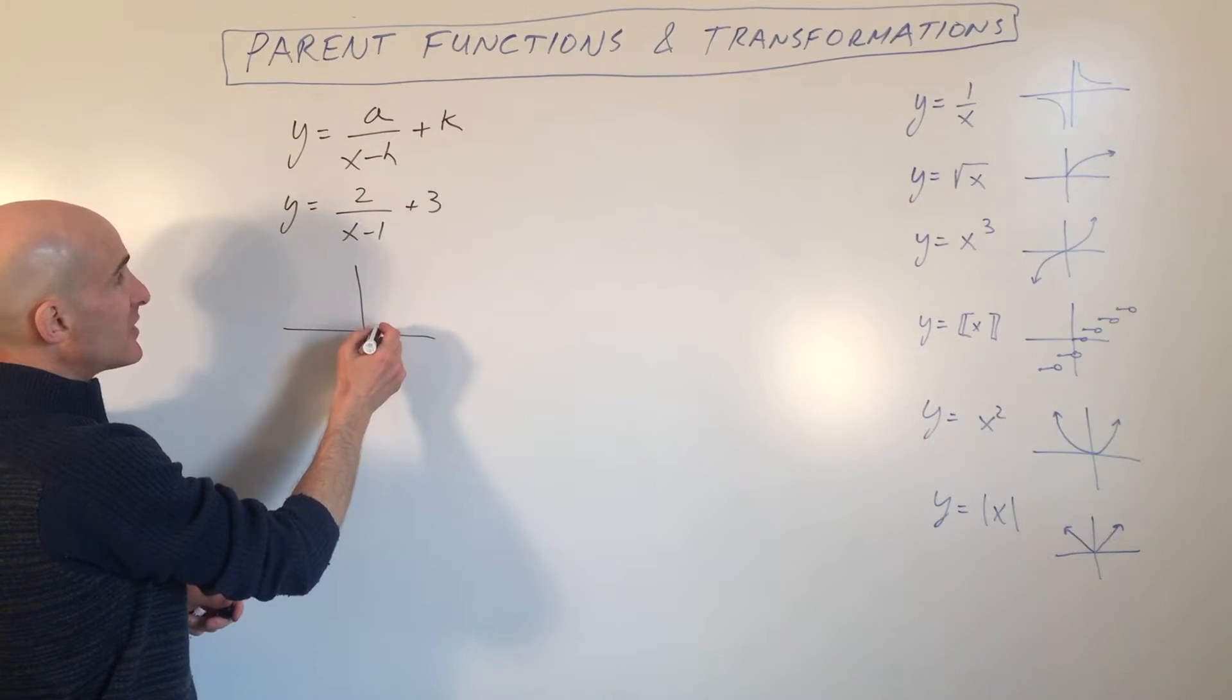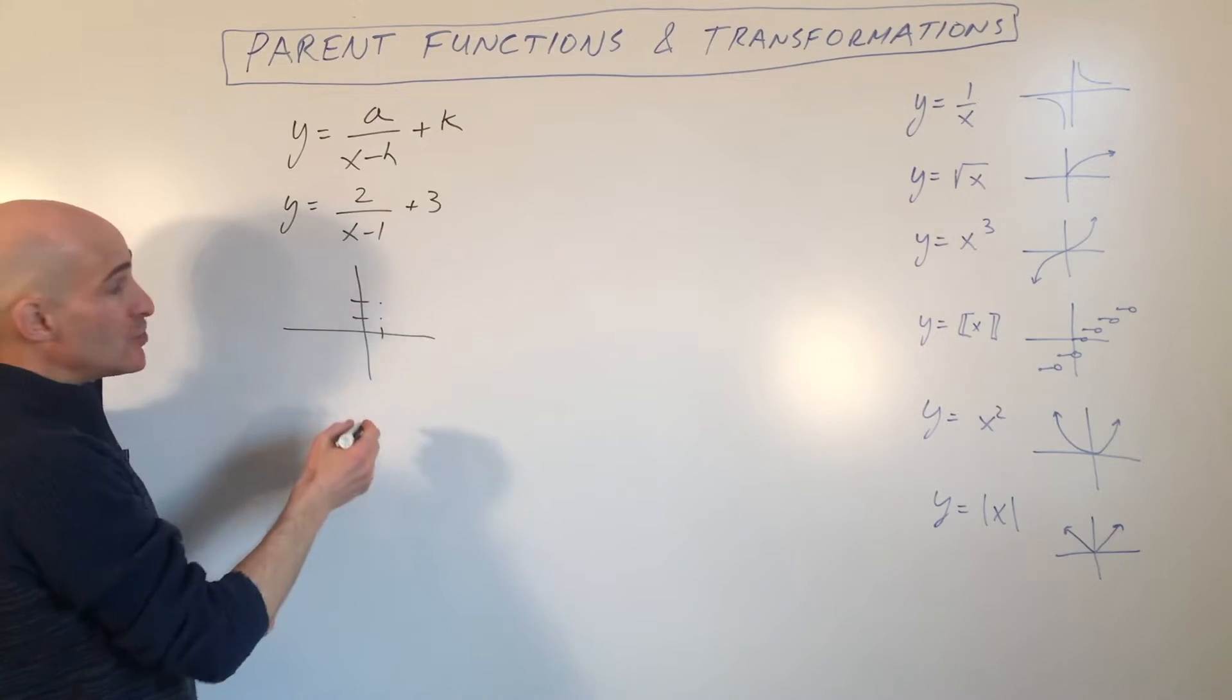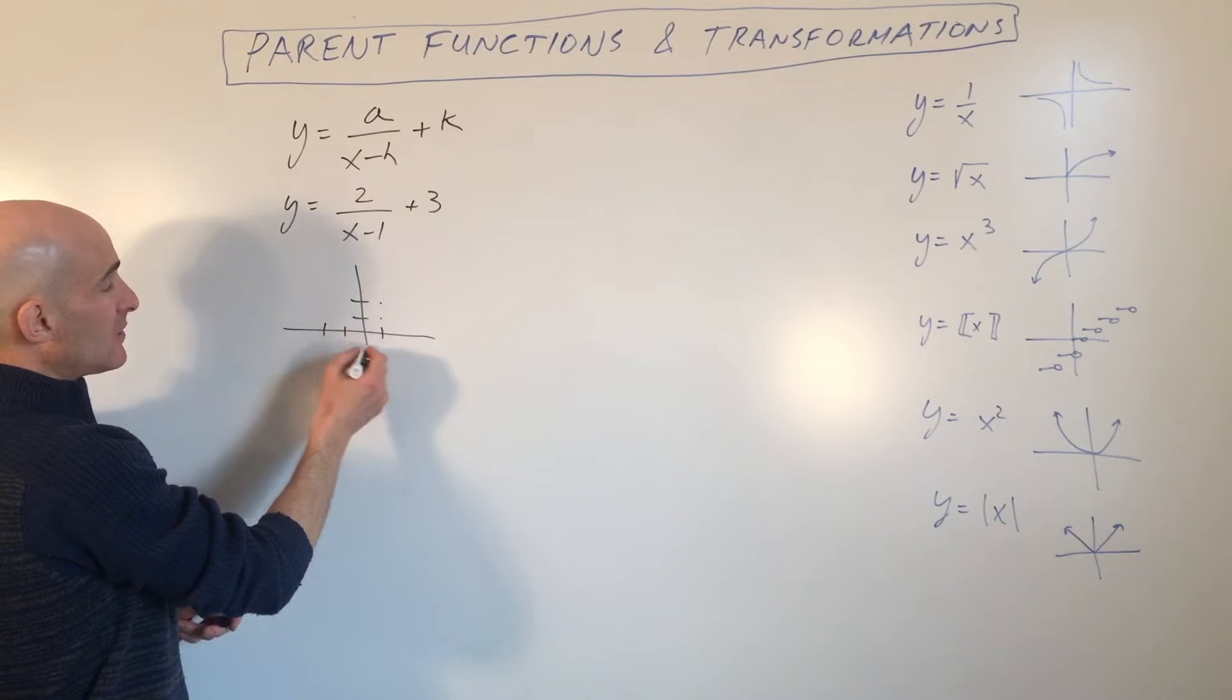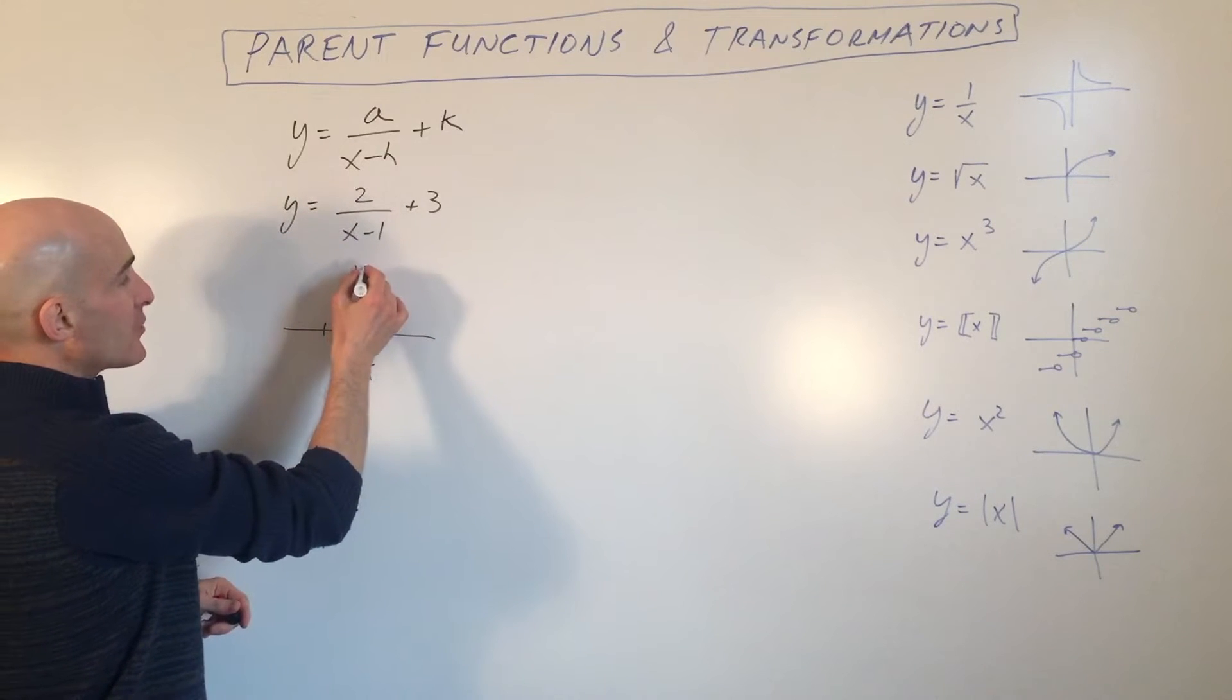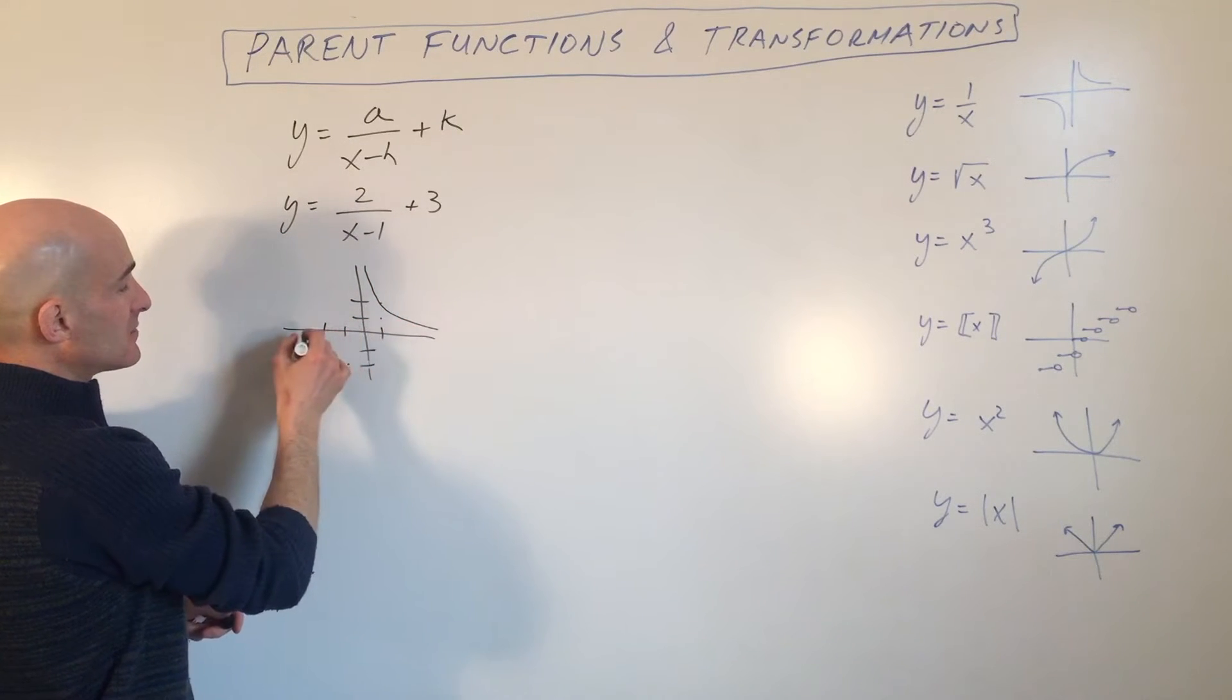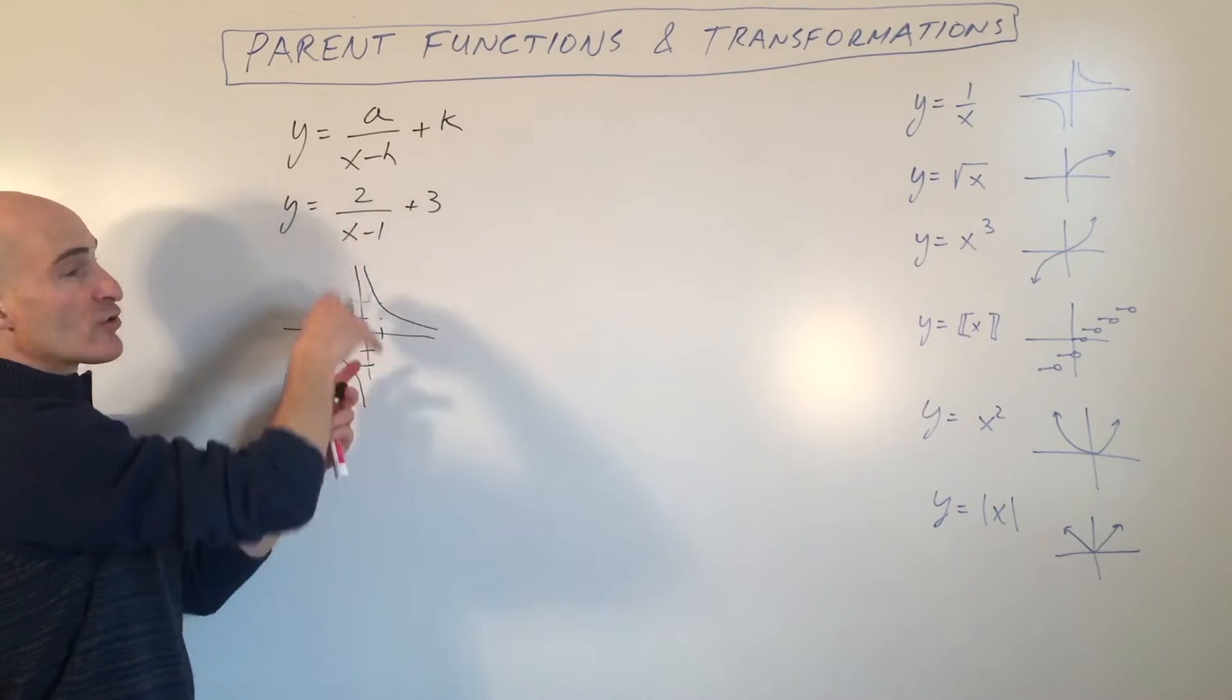So that just means instead of being like over here at 1, 1, now it's going to be at 1, 2. Instead of being over at negative 1, negative 1, you're going to be at negative 1, negative 2. So it's stretching it. So now your graph looks something like this, stretching it in the vertical direction.